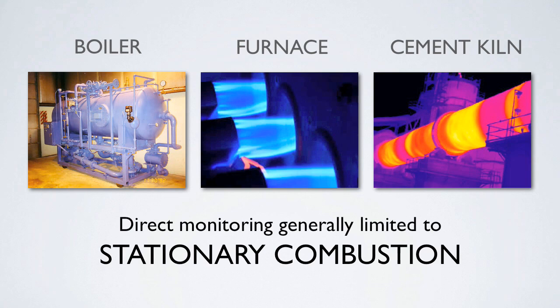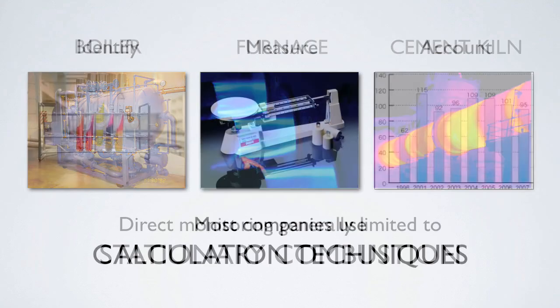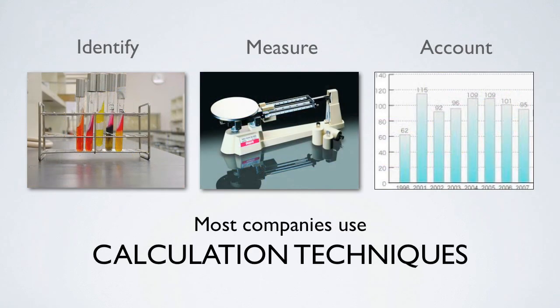However, under the EPA's mandatory reporting rule, many types of facilities are now being required to use direct monitoring equipment to measure emissions. However, as stationary combustion is only one part of many emission sources, most companies use calculation techniques to quantify their greenhouse gas emissions.